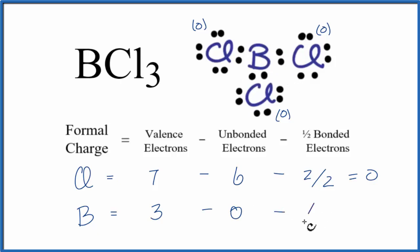And then we'll subtract half of the bonded valence electrons. We have 2, 4, 6. So 6 over 2. 3 minus 3. That equals 0. So the formal charge on the boron here is 0.